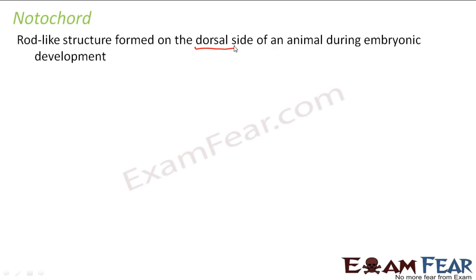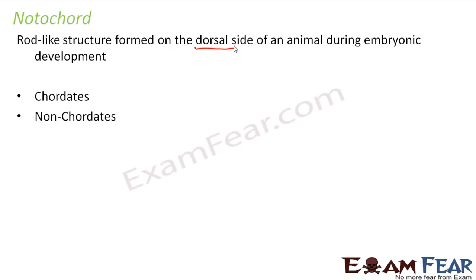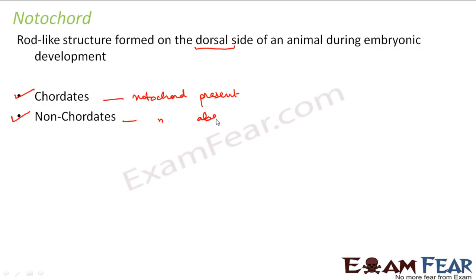Depending upon the presence or absence of notochord, the Animalia kingdom was divided into two types: chordates and non-chordates. Chordates are those where there is a presence of notochord. Non-chordates are those where there is no notochord present — so in chordates notochord is present, and in non-chordates notochord is absent.